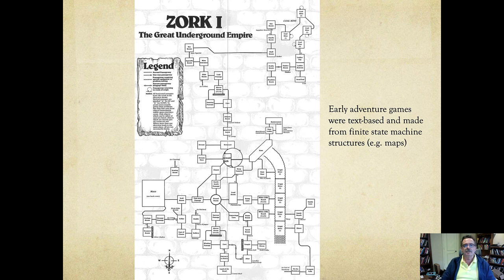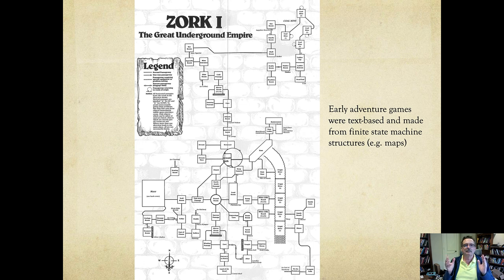I mentioned earlier in the UX design area there's this thing called a flow diagram, a user flow. The flow diagram, the Zork map, and finite state machine are essentially all the same thing. From a high abstract level, they're all finite state machines because they represent states and transitions — that's it. Using one transition you go from one state to another state. So the finite state machine is a unifying abstraction that links games, UX design, and other things together.